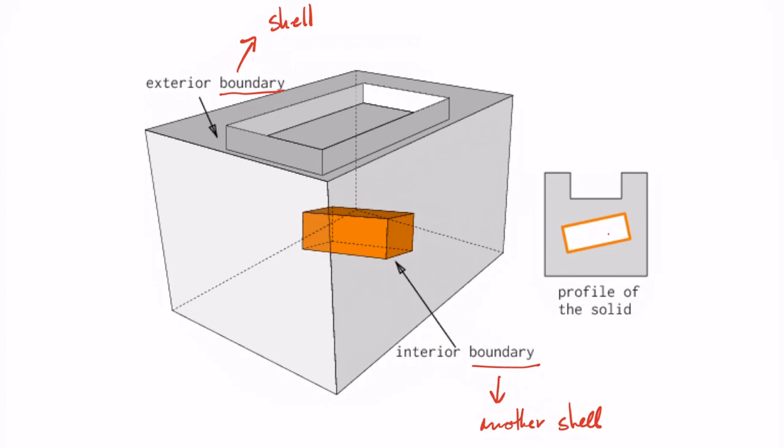And in the case here, the solid has one exterior boundary which is a shell but also has one interior boundary which is also a shell. In 2D, the interior boundaries define holes in the polygon and it's the same idea in 3D. So they define holes but we call them usually voids or cavities.